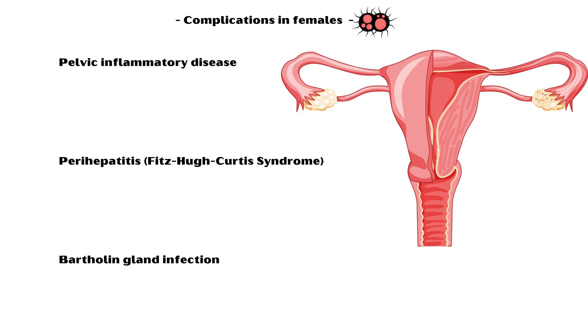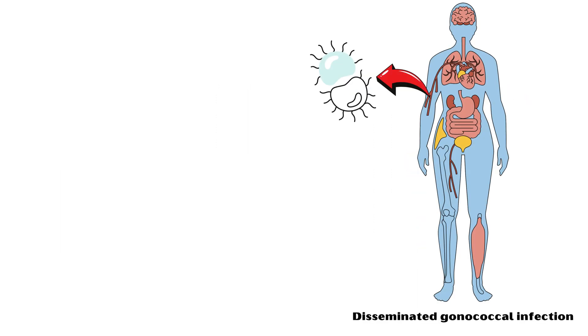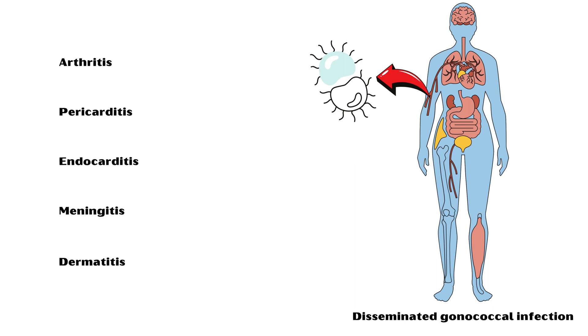Males, females, and neonates can also get disseminated gonococcal infection. It is a serious condition which can cause arthritis, pericarditis, endocarditis, meningitis, and dermatitis.